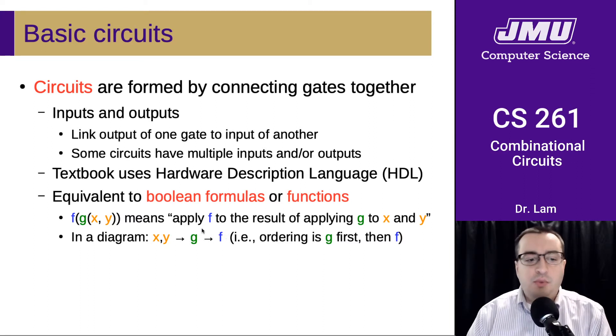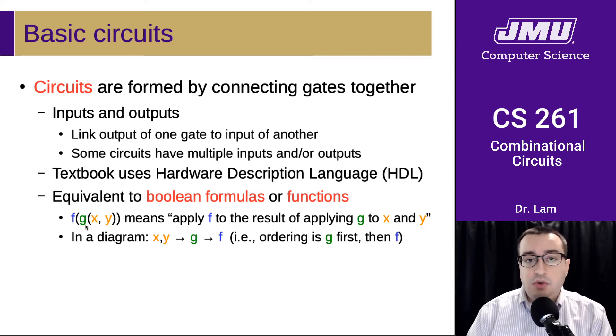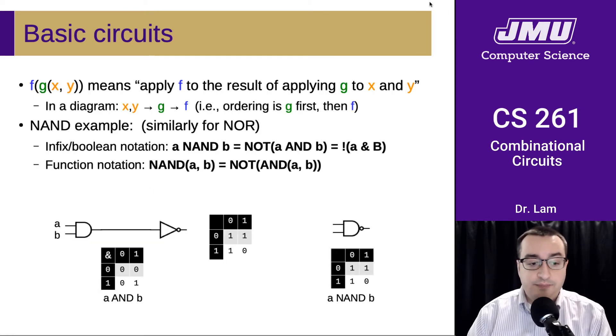The only weird thing about that is that the ordering is kind of reversed. So the ordering is g first and then f because g happens first. And so even though in the function syntax we write it like this, you understand at this point that the g happens first and then the f. And so the diagram just makes that a little bit more explicit.